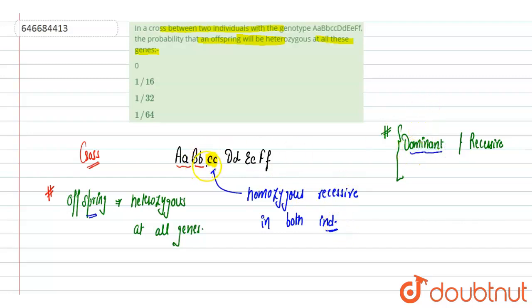So there is completely zero probability for having the offspring which is heterozygous at all the genes, because at all gene it is not possible due to this c gene, presence of this gene. So we can say that zero, yes this is correct. 1 by 16, 1 by 32, 1 by 64, rest three are incorrect options.